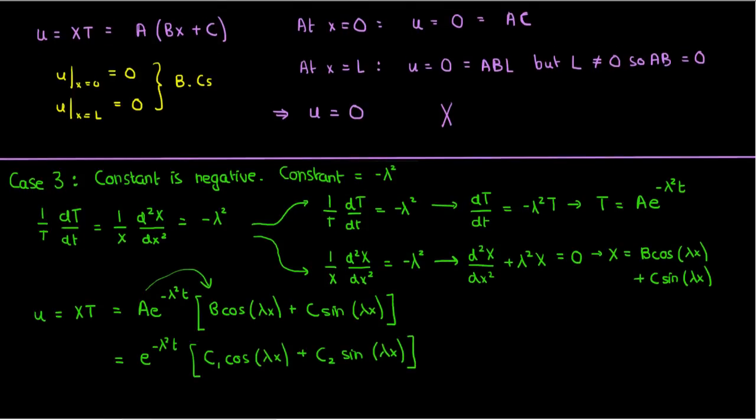Obviously we aren't done yet, we still need to find the values of these constants by applying the boundary and initial conditions. There are three unknowns here, c1, c2, and lambda, and this matches up very evenly with the fact that there are two boundary conditions and one initial condition, which I've written here to make things easier.